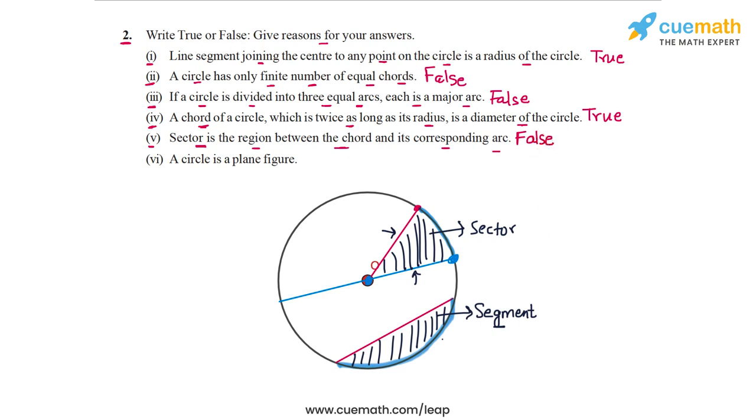Finally, in part six, the statement says a circle is a plane figure, which is true, because all points on a circle lie in the same plane. It is not a three dimensional figure. So the statement in part six is true. And with this, all parts of question two are done.